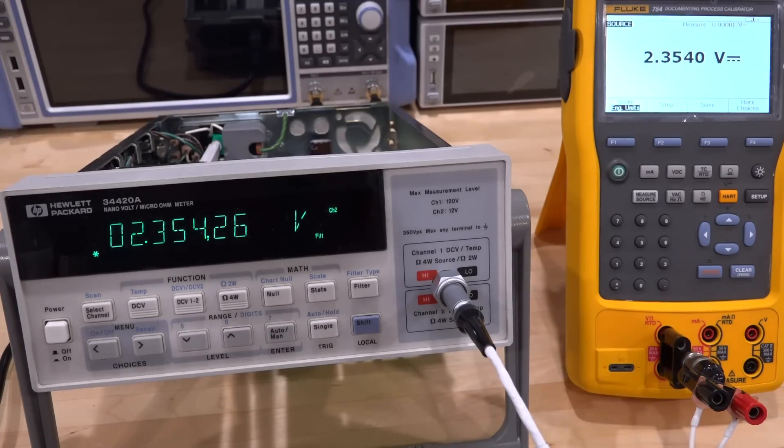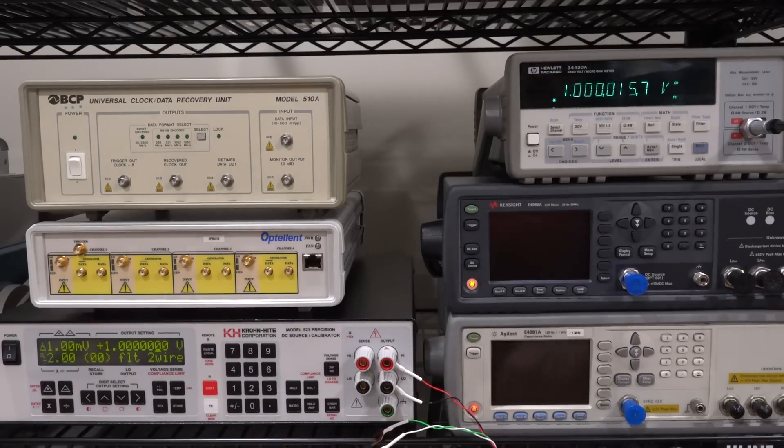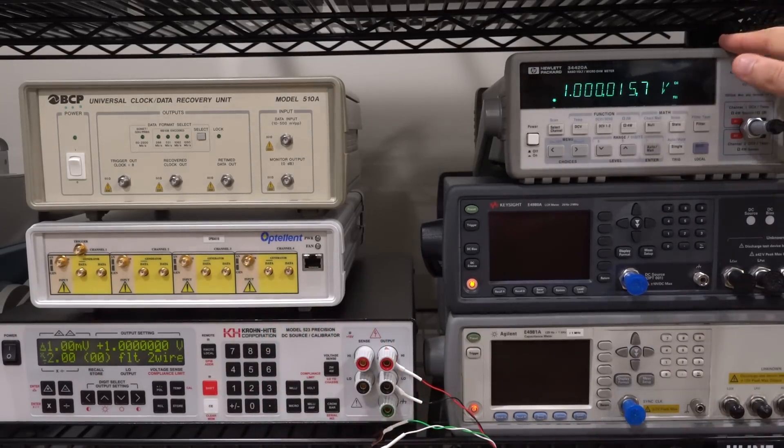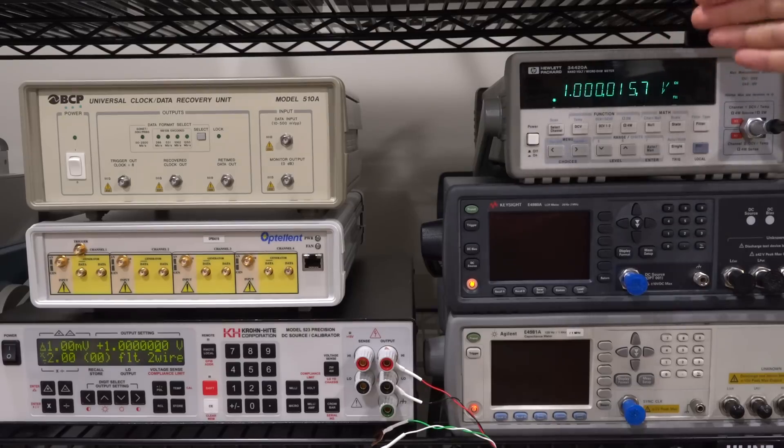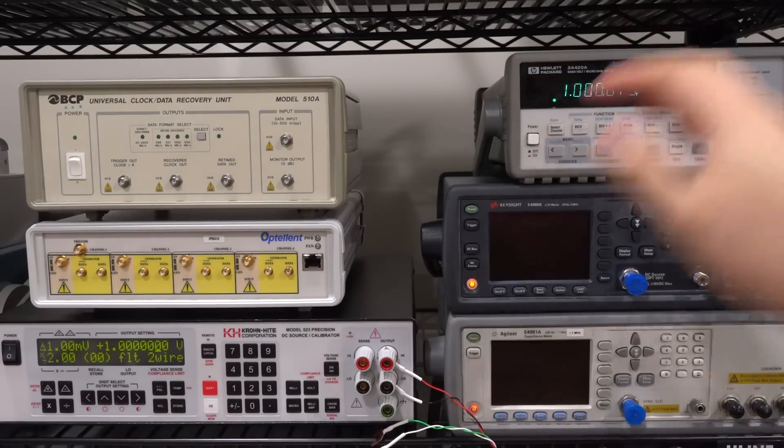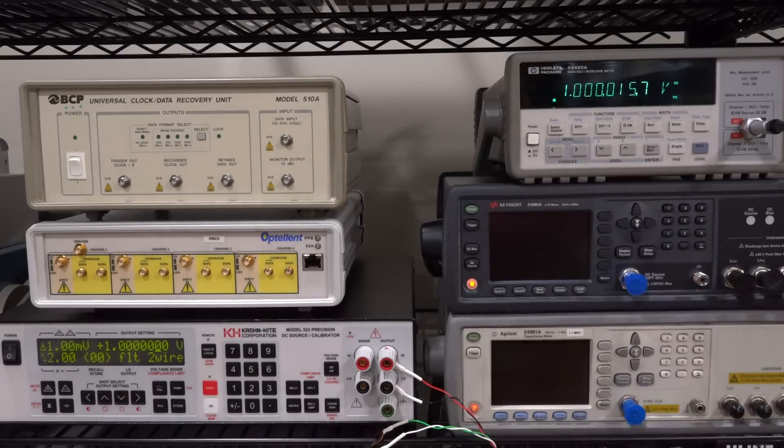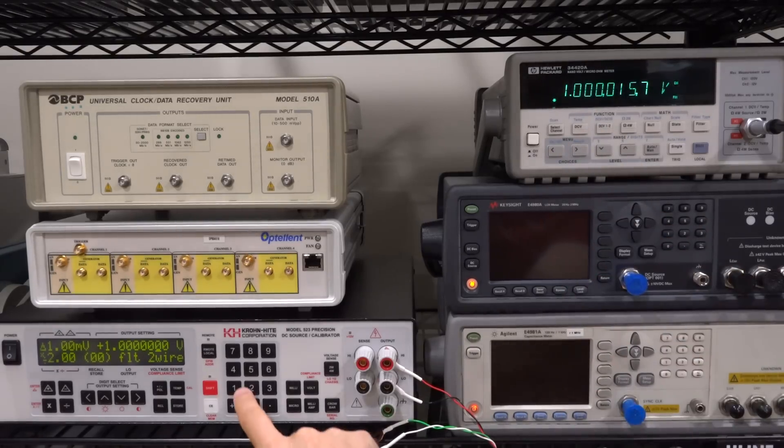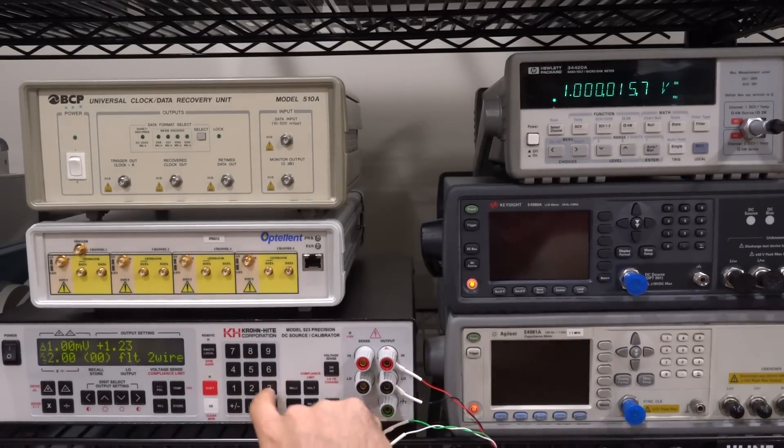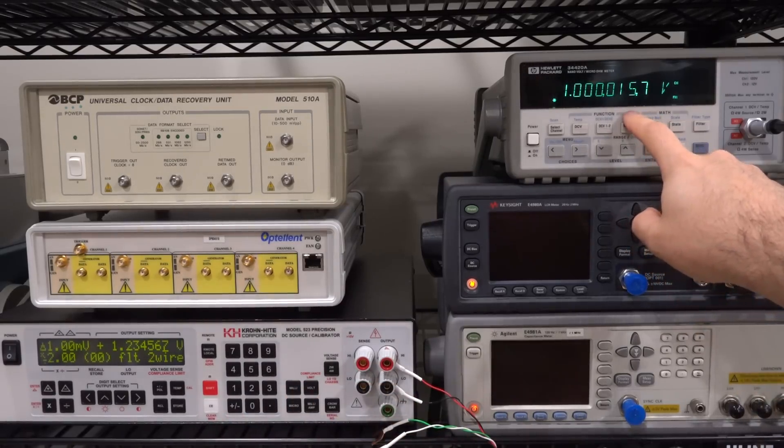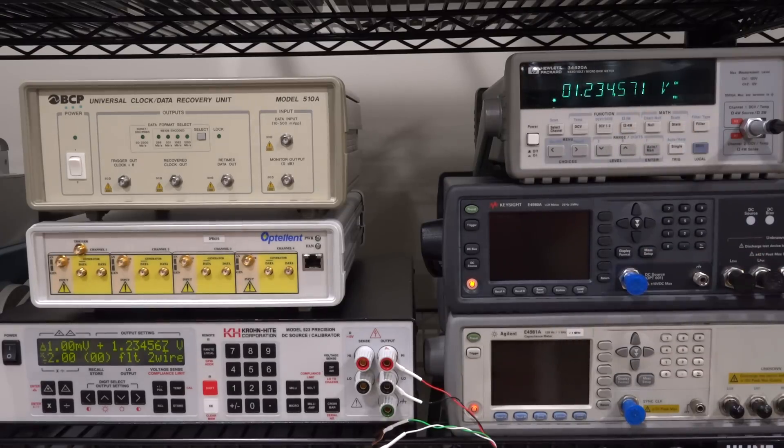Here we are. I have it connected to the Kronheide model 523. Both have been warmed up. You can see it's measuring quite good - only 15.7 microvolts out. This itself needs a bit of calibration, so this may even be closer than shown. Let's try a different value - 1.234567. We should read almost the same offset in that voltage as well. There you go, look at that. Not that far off. I'd say pretty good considering we worked on it.